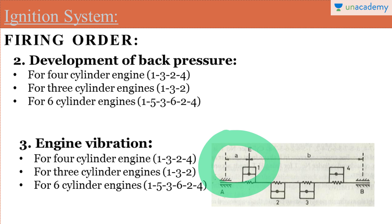If we consider continuous firing order and the fire takes place in cylinder 2 after cylinder 1, this results in an imbalance of load on the bearings in the second cylinder, which creates vibration. If we continue with cylinder 3 and cylinder 4 in continuous firing order, it will result in severe vibration in the engine due to the imbalance of load on the bearings.